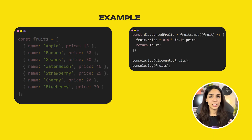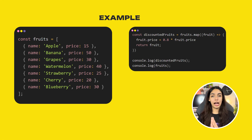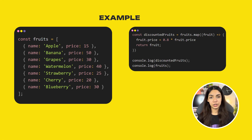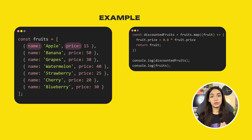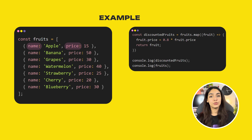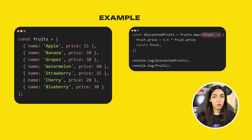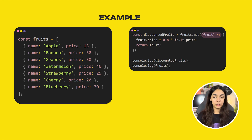Now let's consider an example where you want to map an array of objects to a new array. I have an array called fruits where each fruit is defined as an object with properties name and price. I want a new array where the price of all fruits is discounted by 20%. To do that: const discountedFruits = fruits.map() with a callback function.